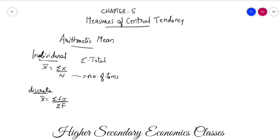For continuous series, x-bar equals sigma fm divided by sigma f. Here, we write the midpoints of each class. The formula uses fmi. We have several methods available, including the step-deviation method. We will learn just the direct method.